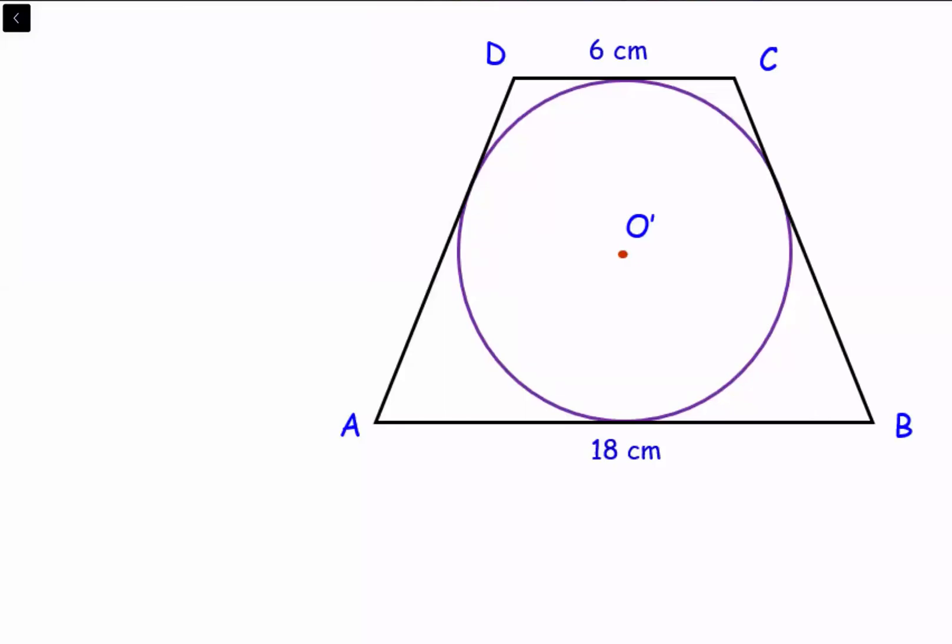Let's see this interesting question. We have ABCD is an isosceles trapezium. These two sides are equal and it's circumscribing a circle, that is all the sides are tangent to the circle.